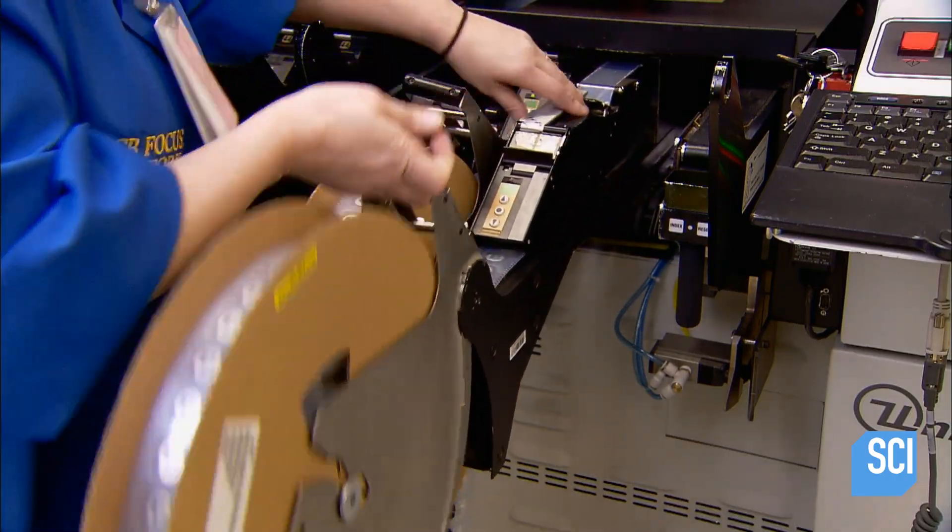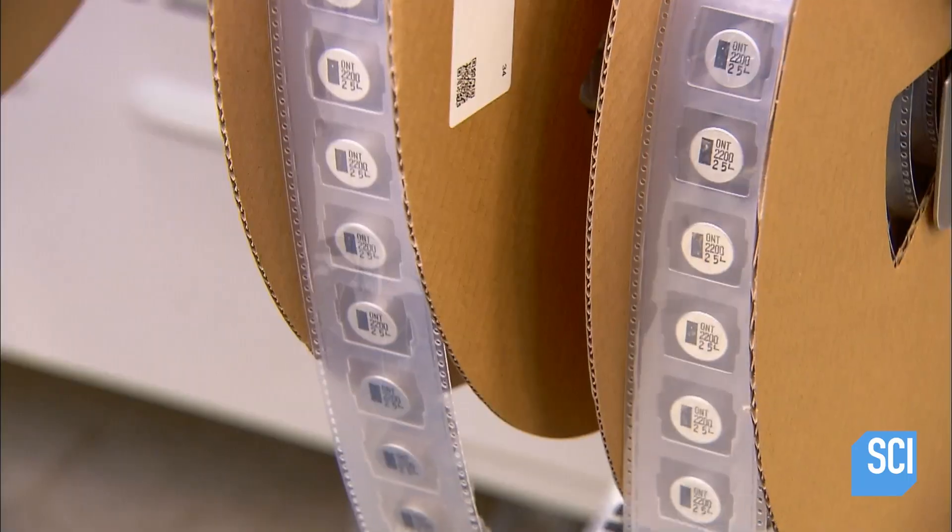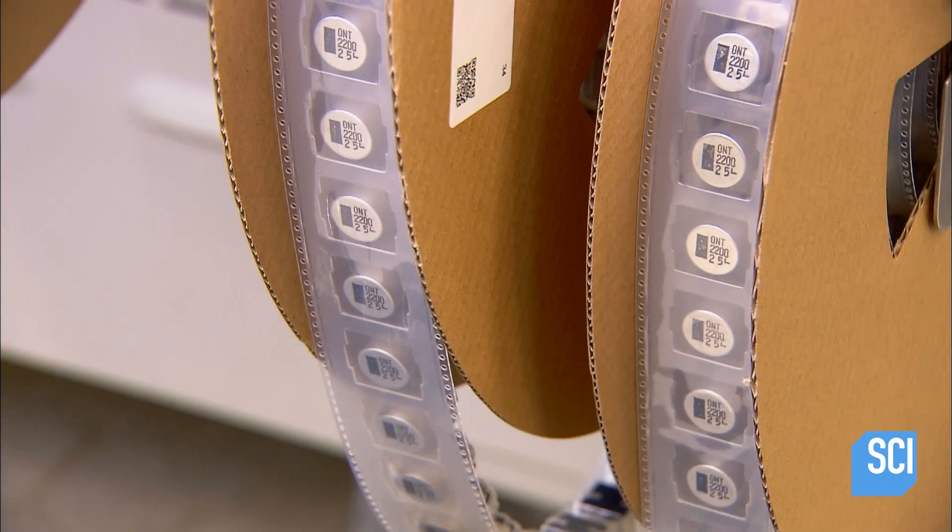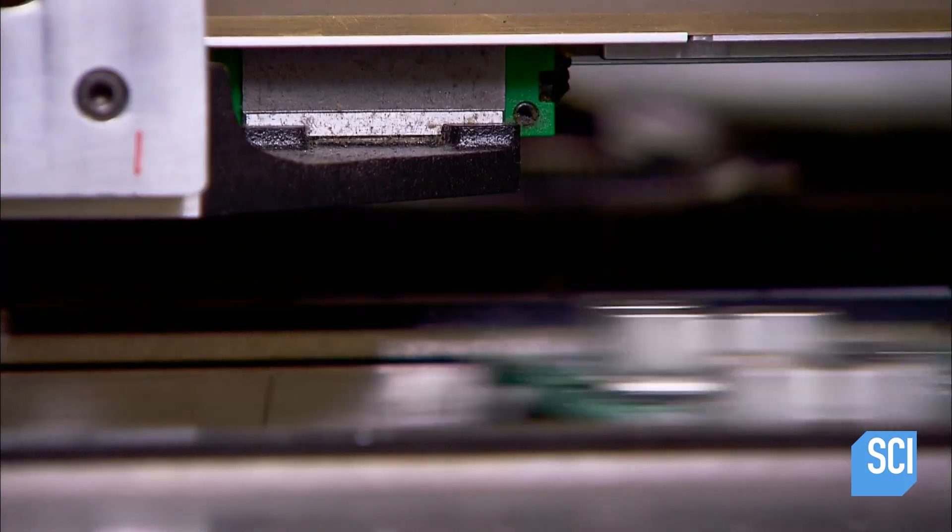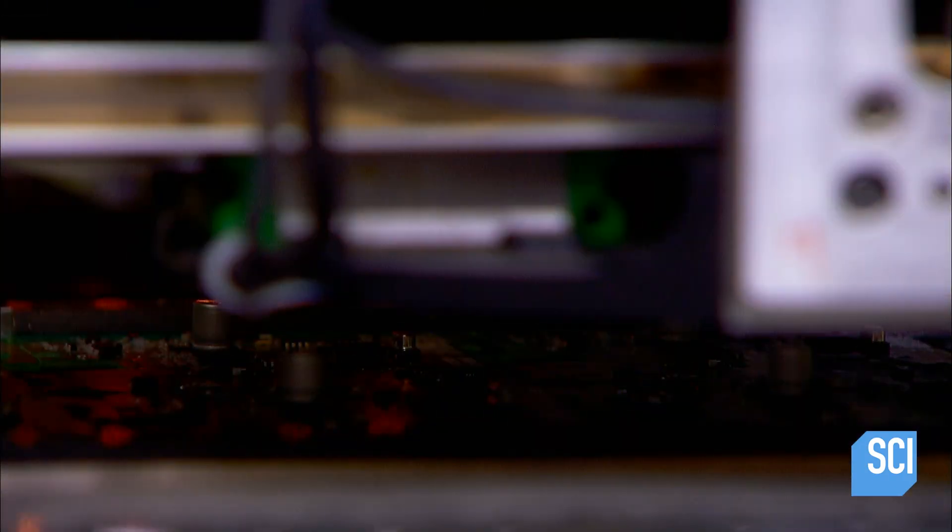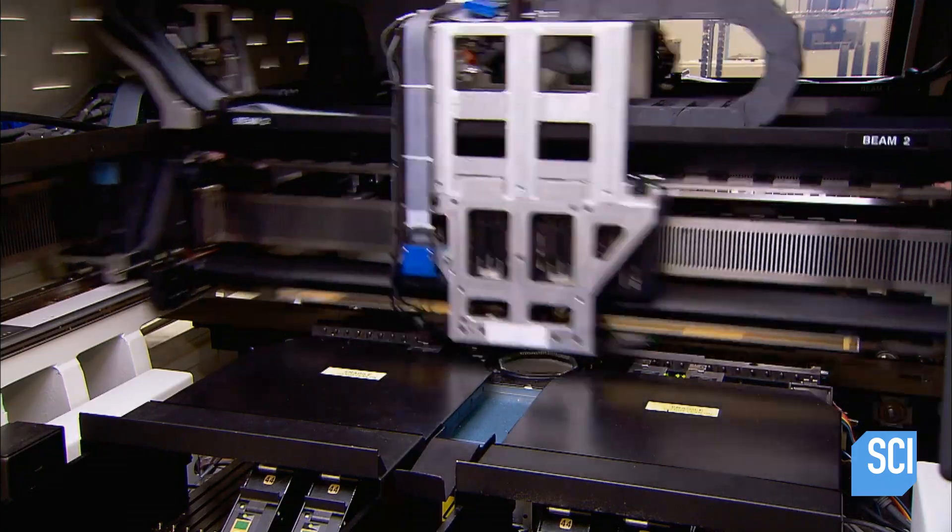Bulkier components are stored on a different size reel, which workers mount on another type of pick-and-place machine. It does the same operation as the previous one, only slower due to the larger size components.